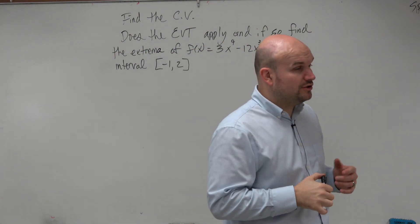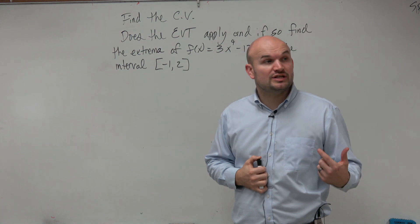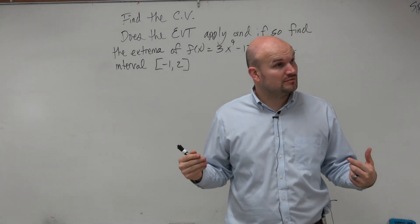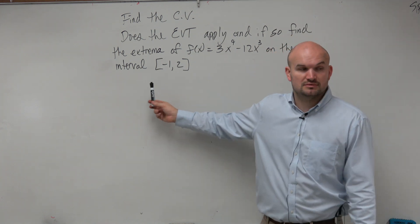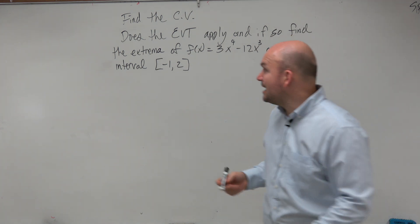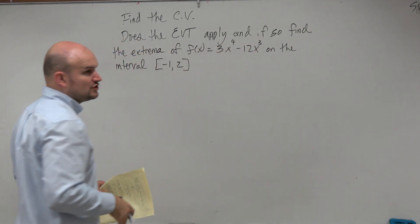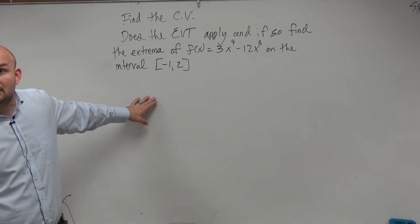For the EVT to exist, we need to make sure that our function is continuous on a closed interval. So we look at this and say, alright, do we have a closed interval? Negative 1 to 2, right? And then again, do we also have a continuous function? 3x^4 - 12x^3. Is that a continuous function?